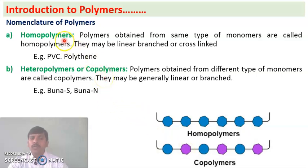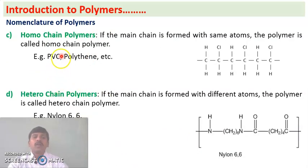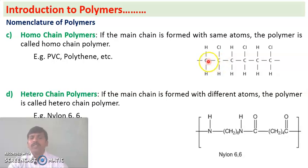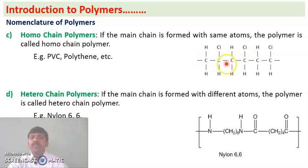Homochain polymers are polymers in which the polymer chain contains only the same type of atoms. For example, in polyvinyl chloride — CH₂−CHCl−CH₂−CHCl — the polymer chain contains only carbon atoms (C−C−C−C), so it is called a homochain polymer.